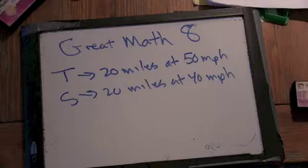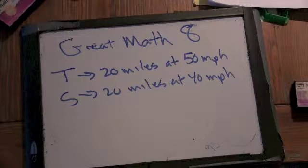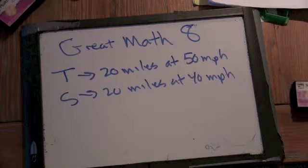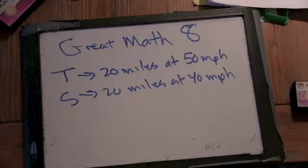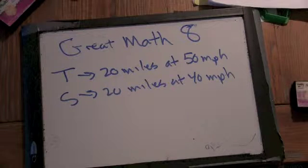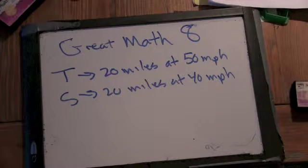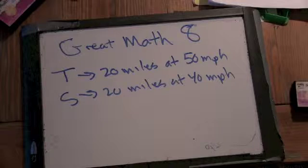It says: Terry drives 20 miles at an average of 50 miles an hour, while Sherry drives 20 miles at an average rate of 40 miles per hour. Neither person stops. Terry needs M fewer minutes to complete the trip than Sherry does. What is the value of M?